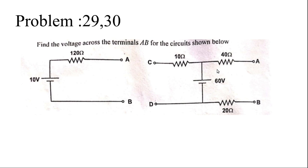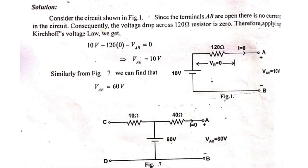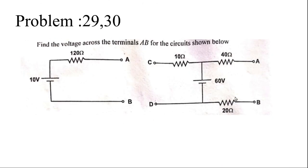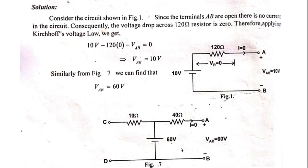Simplifying, Vab = 10 volts. Similarly for the second problem, if you set I = 0 then you will get the same answer. Even if 20 ohm is mentioned, there will not be any flow of current, so the voltage drop across that resistor is zero. Therefore the voltage across terminal AB is equal to 60 volts.